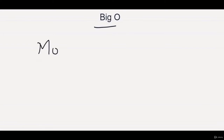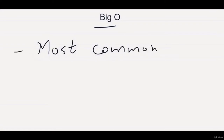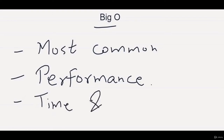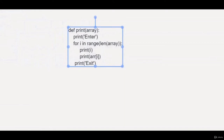Big O is the most common measure of an algorithm and it helps us calculate the performance of the code. Every interviewer wants you to write the most efficient code, and you check its performance using this Big O algorithm. It is important to know because it is basically a measure of growth, and we can calculate both time and space complexities using Big O. We will first begin with time complexity.